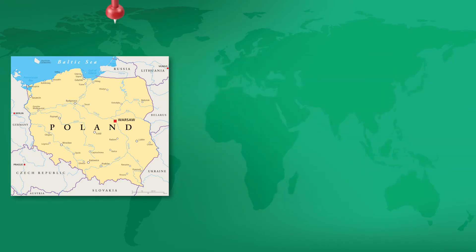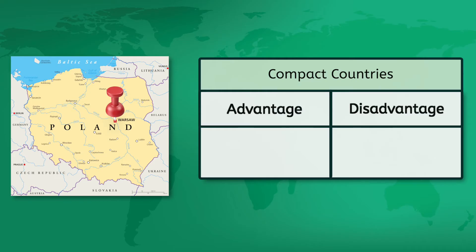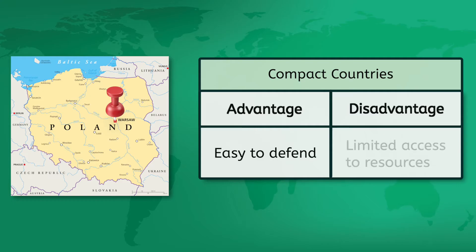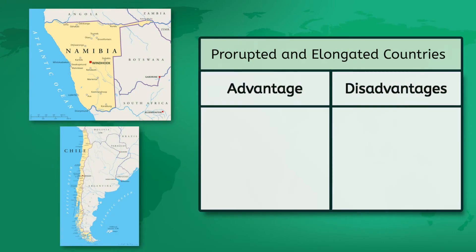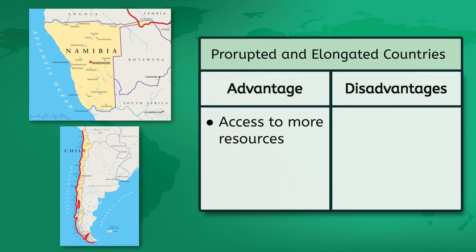In compact states, the capitals are usually centrally located, making them much easier to defend. However, compact states are often smaller, so their resources can be limited. Now look at Namibia and Chile — their shapes give them access to more resources. Namibia's tail portion reaches the Zambezi River, and Chile's elongated shape gives it an extensive coastline. However, elongated states and the tail portion of prorupted states can sometimes be hard to defend.